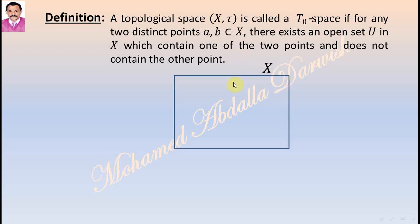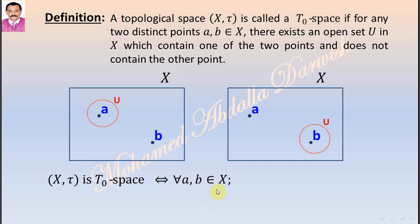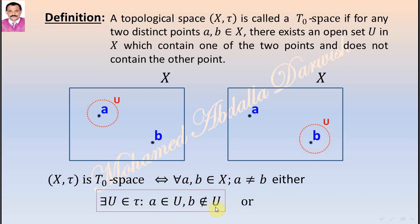What does this mean? If we have a set X and two points A and B in X, there exists an open set U such that A is in U but B is not in U, or B is in U but A is not in U. Mathematically, we state the definition as follows: a topological space (X, T) is T₀ if and only if for any A and B in X with A not equal to B, either there exists an open set U such that A is in U and B is not in U, or there exists an open set U such that A is not in U and B is in U.